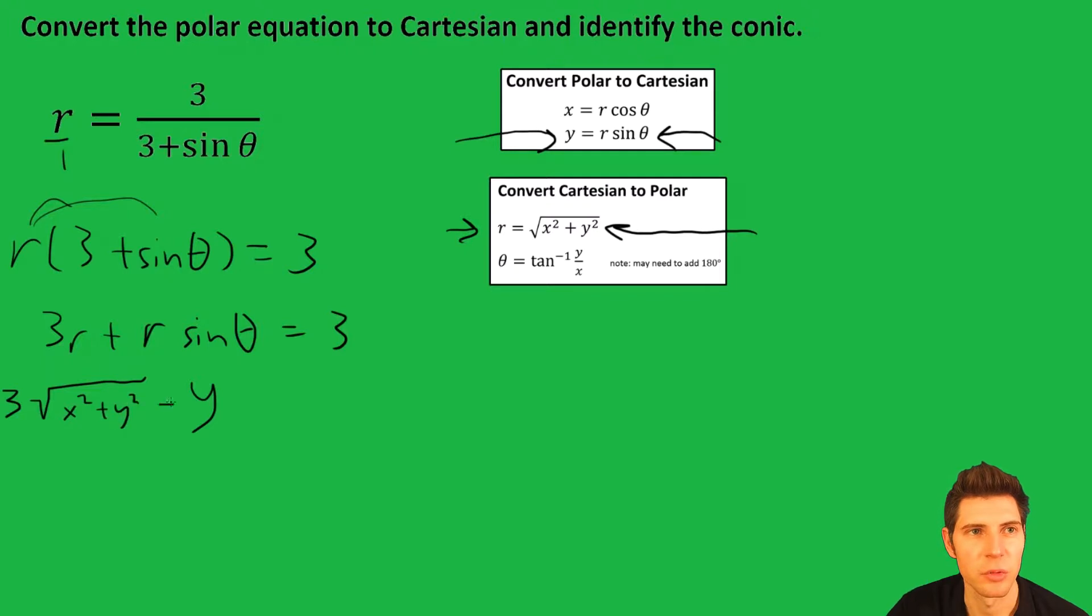Now we can subtract y from both sides. We end up with 3 times the square root of x squared plus y squared equals 3 minus y. And then you can square both sides.